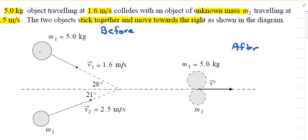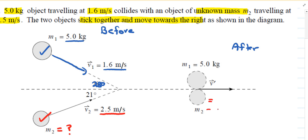The first object, highlighted in blue, has a mass of 5 kilograms and a speed of 1.6 meters per second. It's moving in a downward direction at an angle of 28 degrees. The second object is moving at 2.5 meters per second with unknown mass. It's moving in the upper direction at an angle of 21 degrees. Once the two objects collide, they move together to the right.